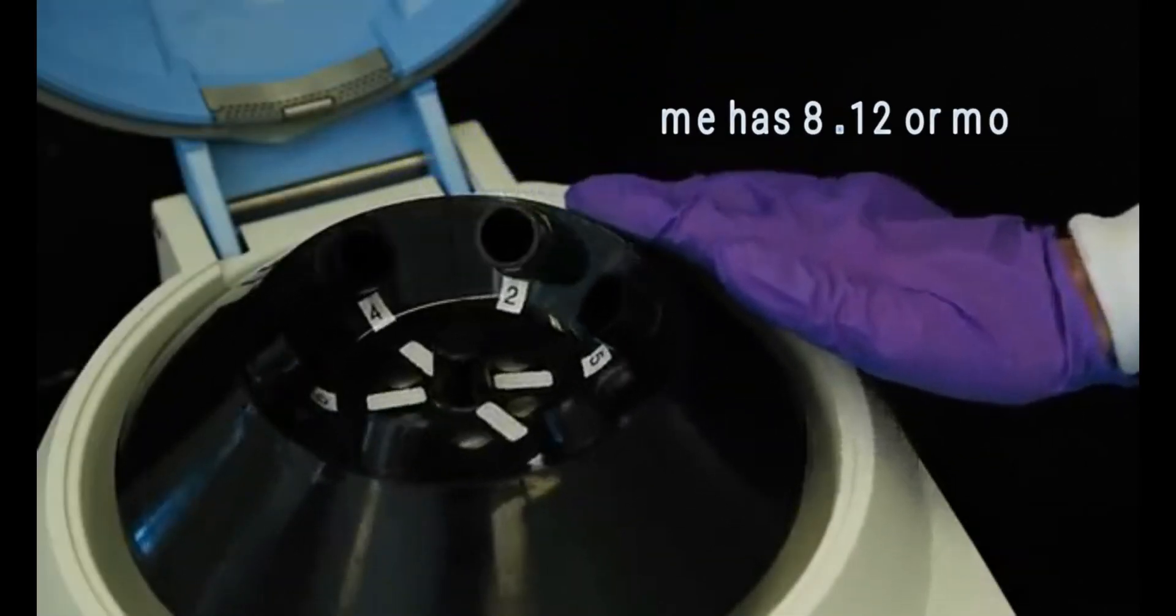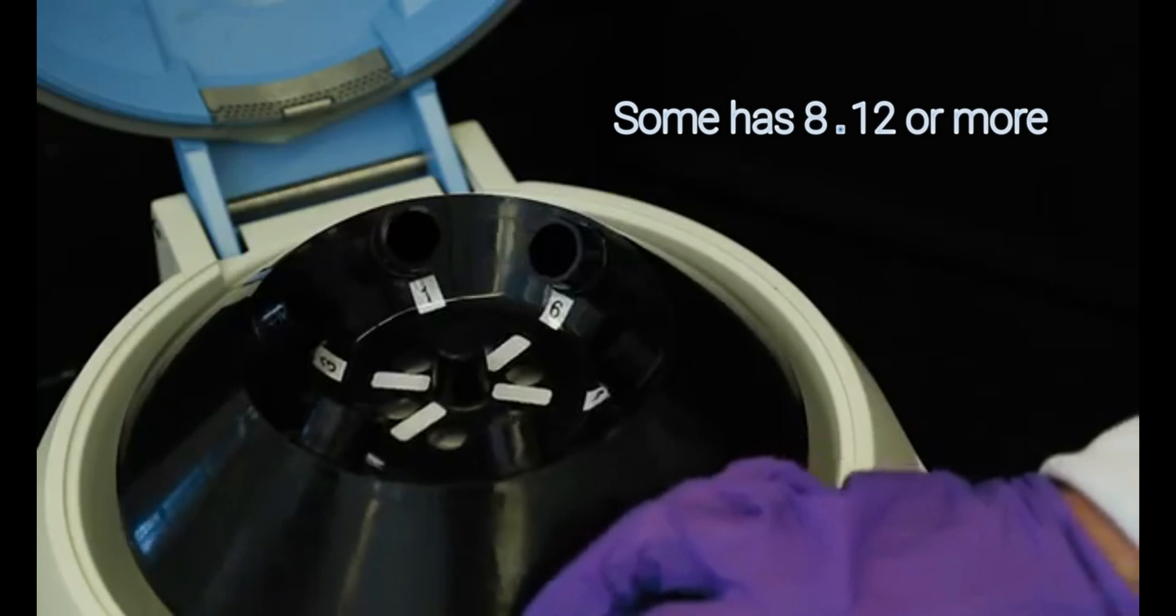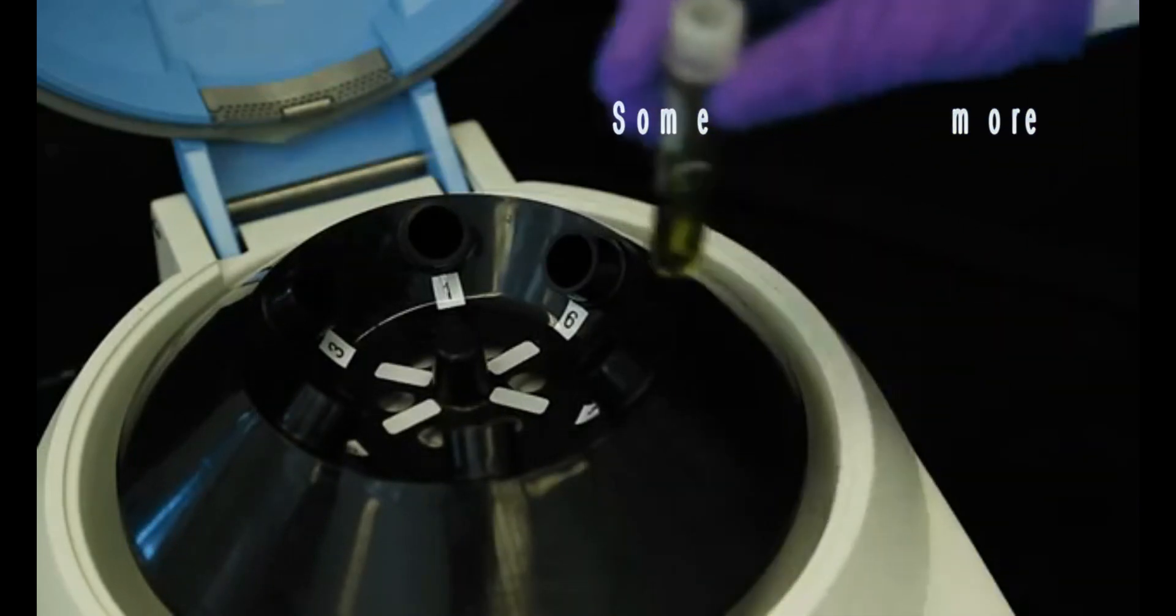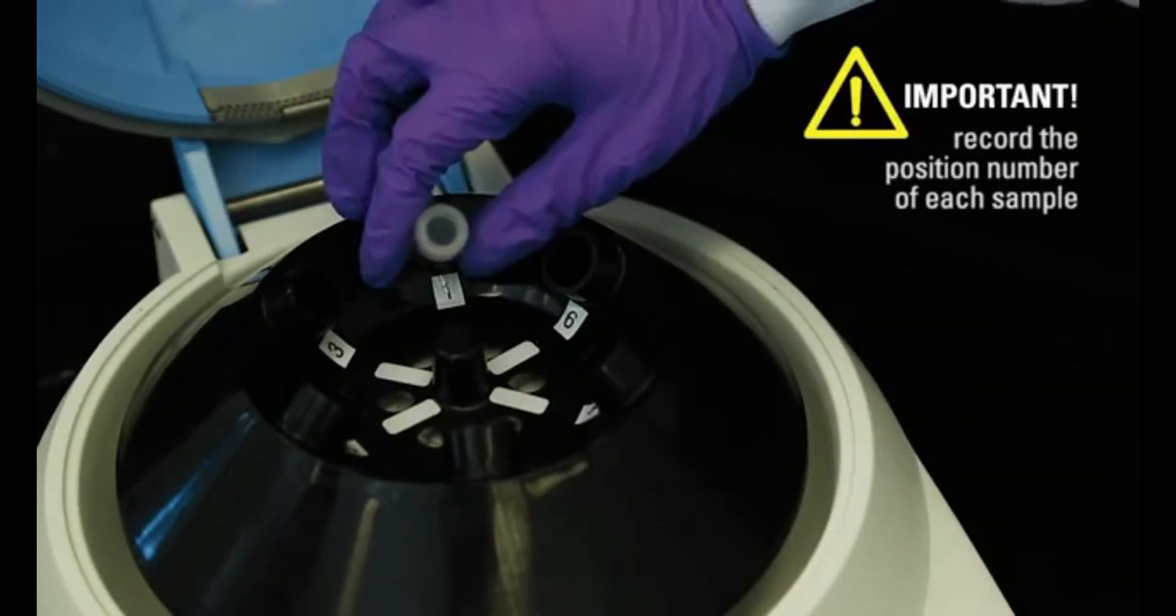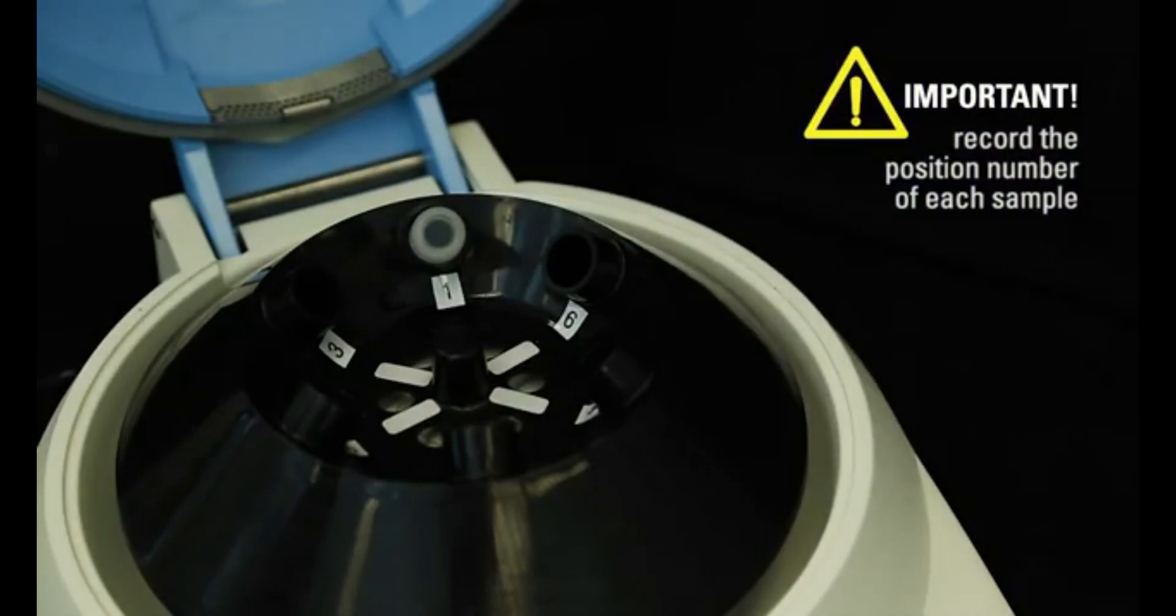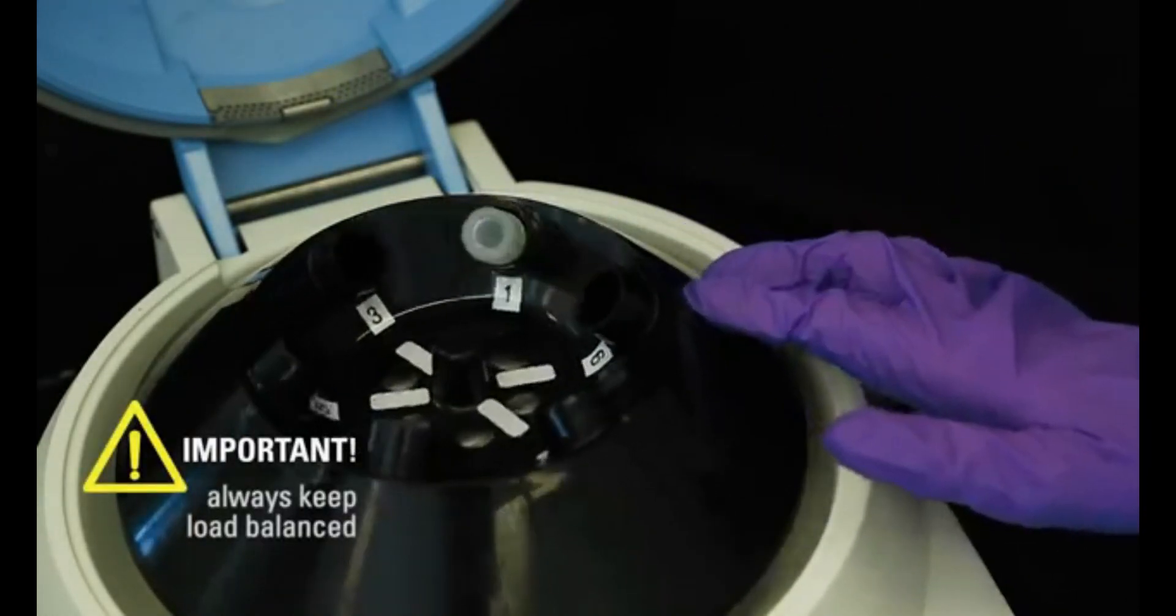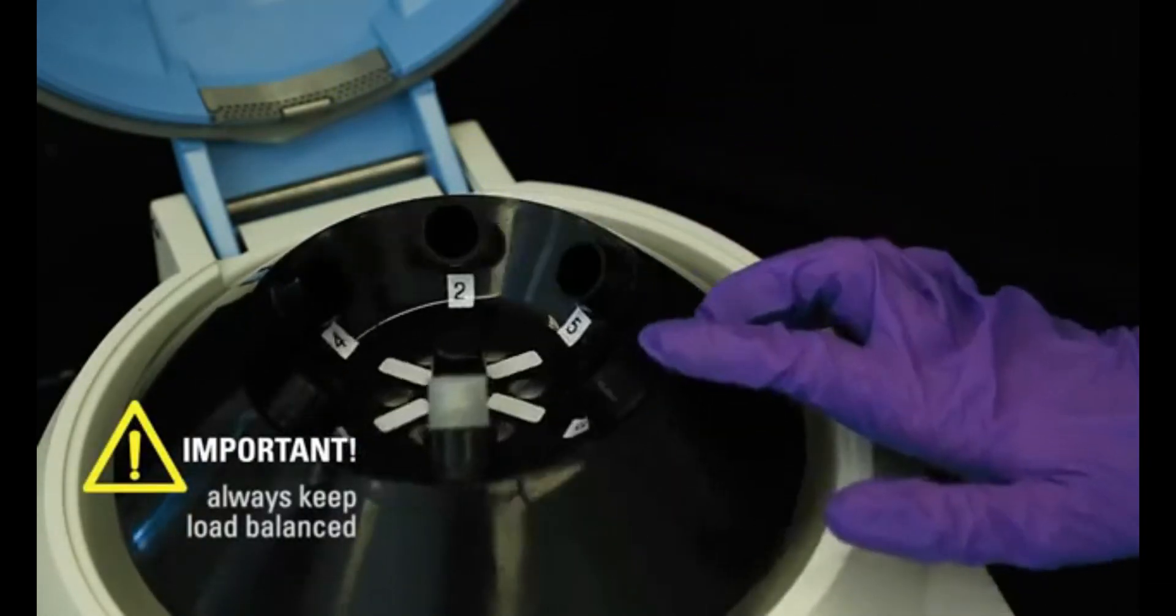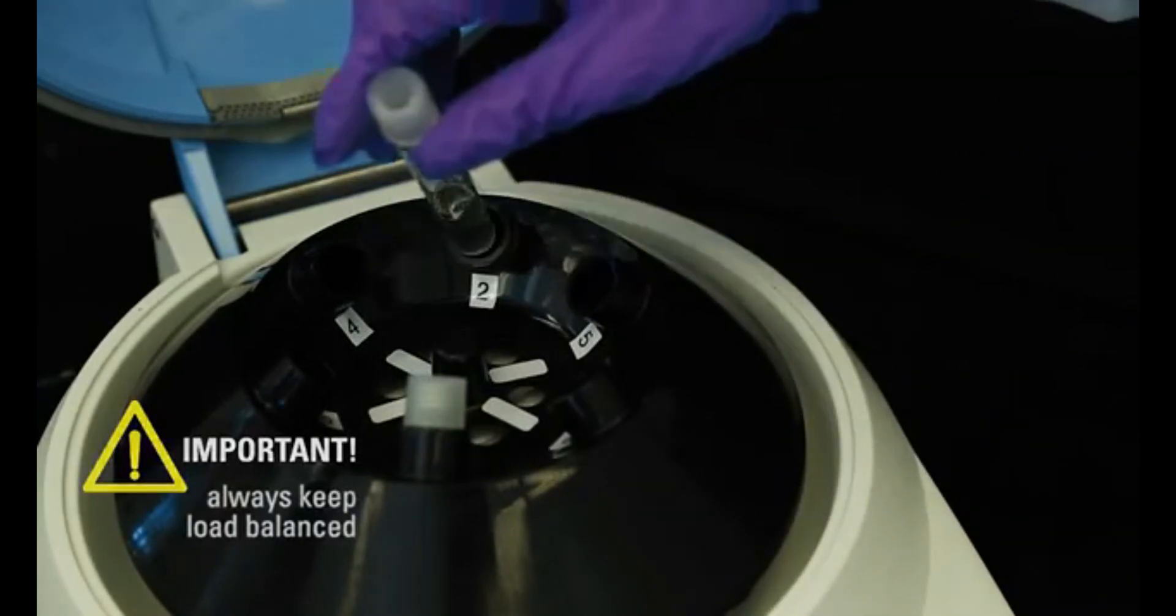Our centrifuge has six positions. All positions are numbered. When placing a test tube into the centrifuge, make note of the position number. Make sure every tube in the machine has a corresponding tube directly opposite to it for balance.